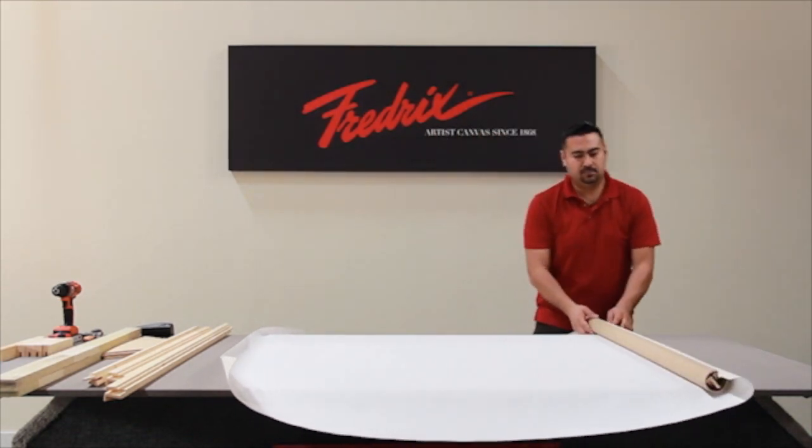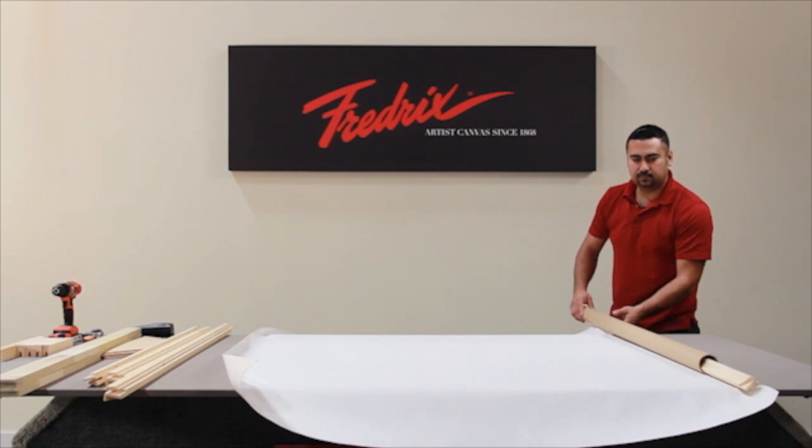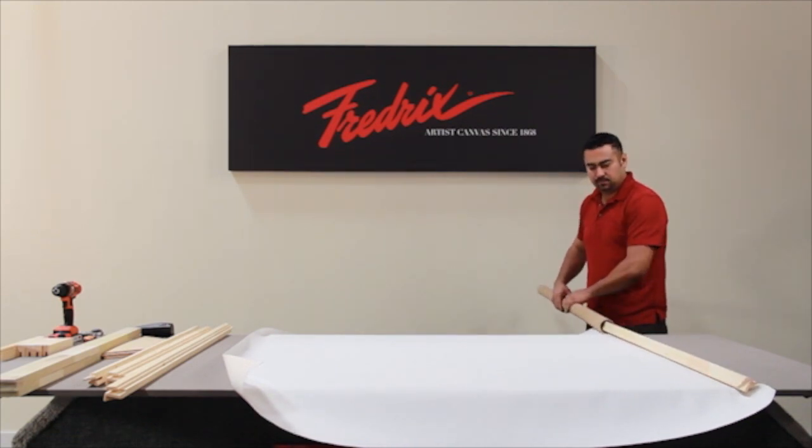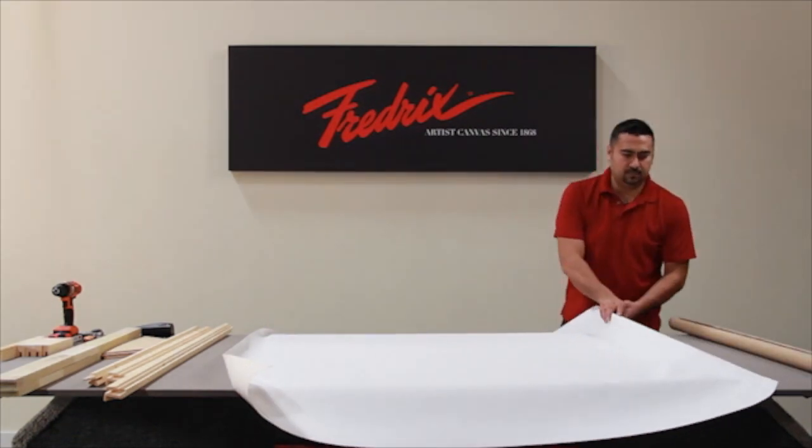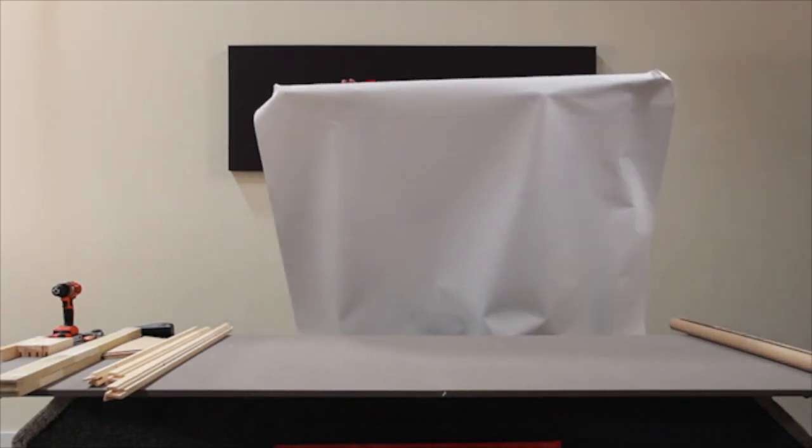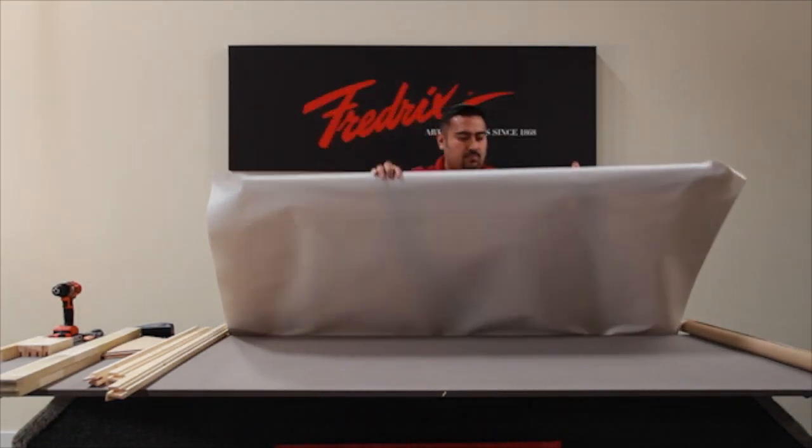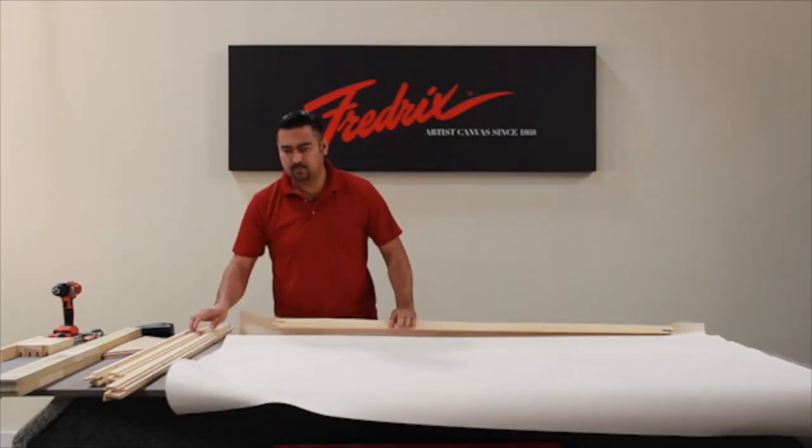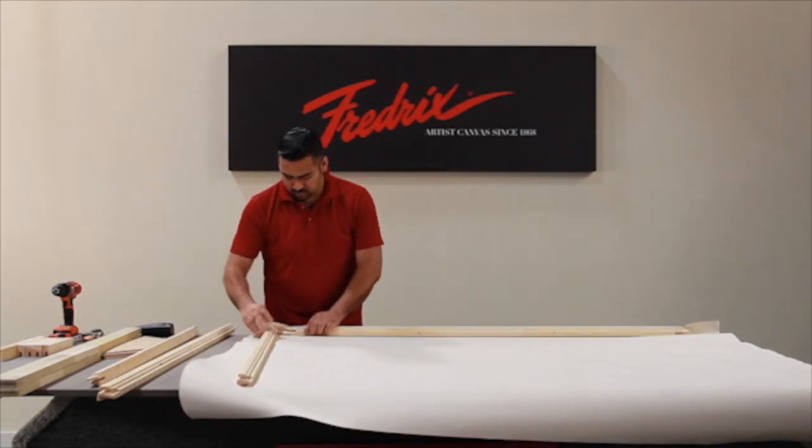Roll out your canvas. This will reveal the tube covering the stretcher bar that is pre-attached to the canvas. Lay your canvas flat, face down, with the pre-attached stretcher bar closest to you.